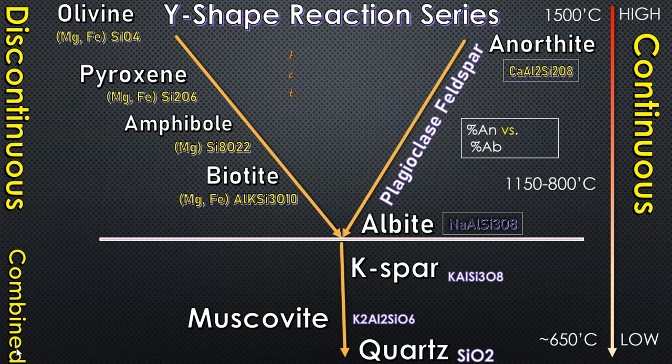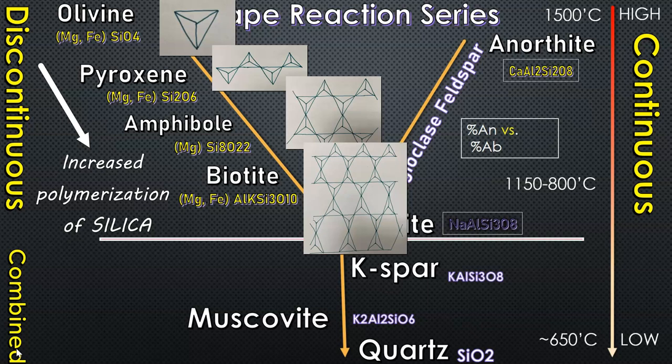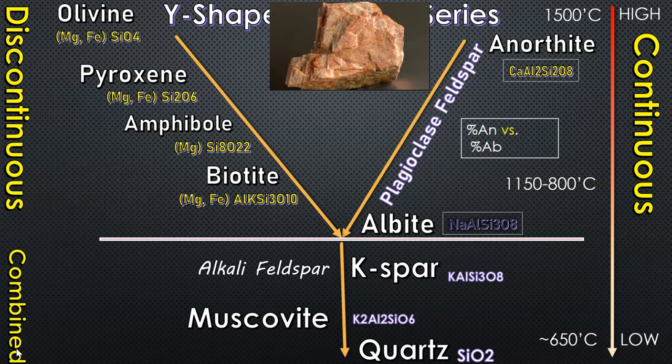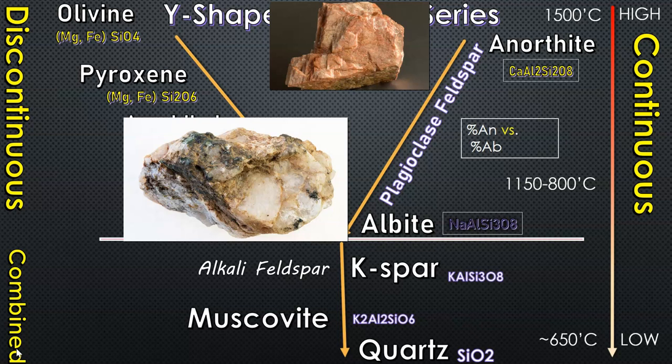On the other side, with the same kind of temperatures, you get the feldspar, the plagioclase feldspar forming from anorthite at the hottest, which is purely calcium with the silica and aluminum. Then down at colder temperatures of albite, which is going to be a more sodium percentage, and this happens around 1150 degrees Celsius.